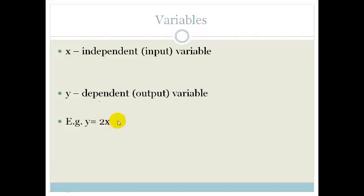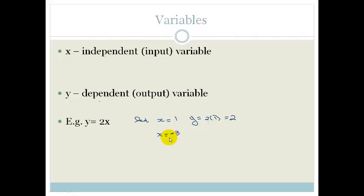For example, if we let x equal to 1, then we get an output variable which is dependent on it: y is equal to 2 times 1, which is 2. If x is minus 3 — please note that we're changing it — so if it's the independent variable, it's the input variable, then we can say y is equal to 2 times minus 3, which is minus 6. So the y is dependent on the x, and x is the value that we're putting in.